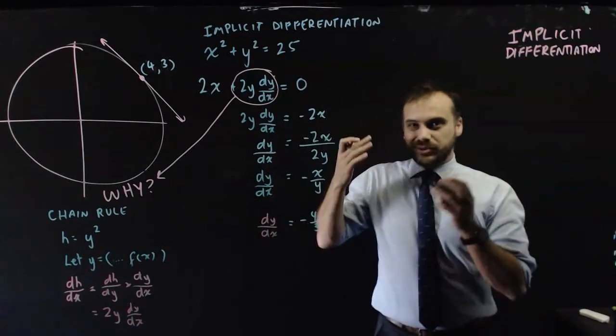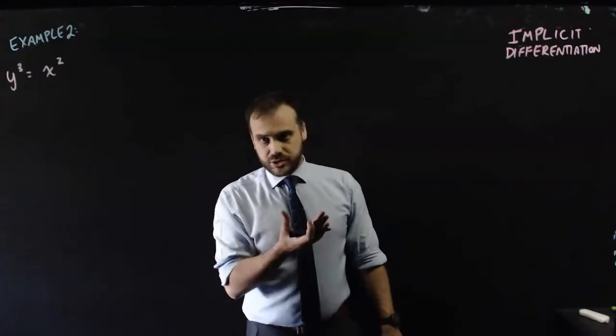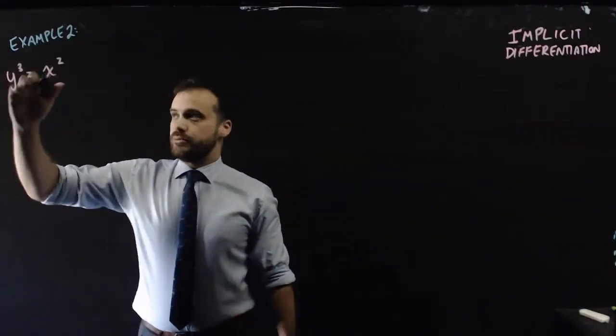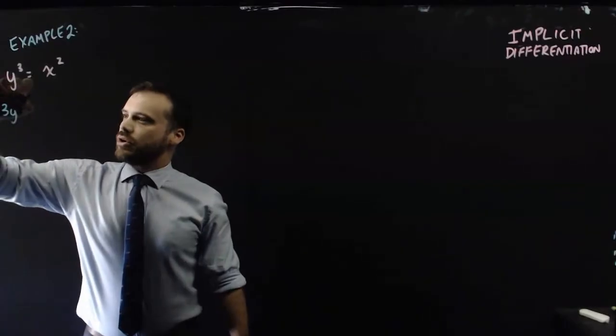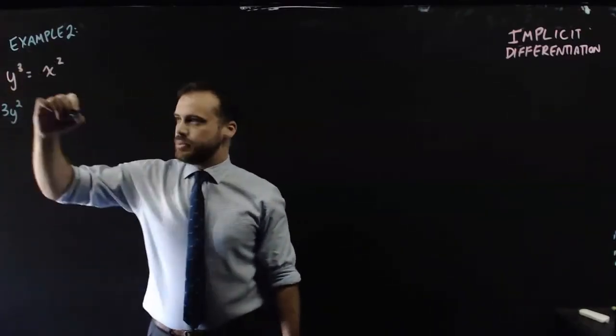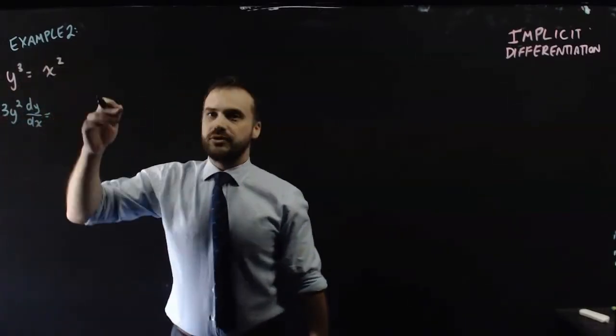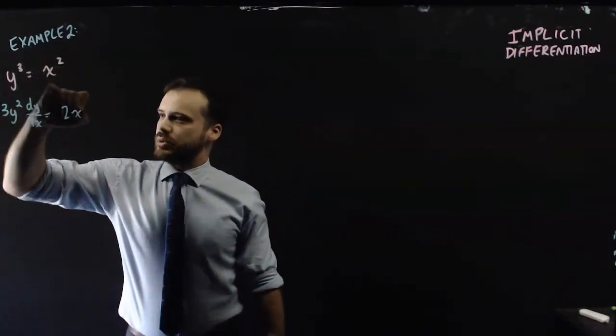And then we can rearrange to come up with whatever our derivative is. In this case, dy/dx equals negative 4 over 3. So let's do some grunt work. Let's do some practice. The derivative of y cubed will be 3y squared. But that's a y term.